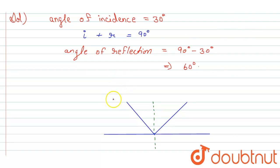So now name them - this is the incident ray and this is the reflected ray.